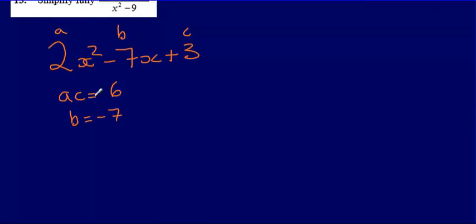Then from here, what I'm going to do is I now need to find two numbers which will multiply to make 6 but will add together to make negative 7. And because it's a quadratic, I know that I'm going to be putting it into double brackets.